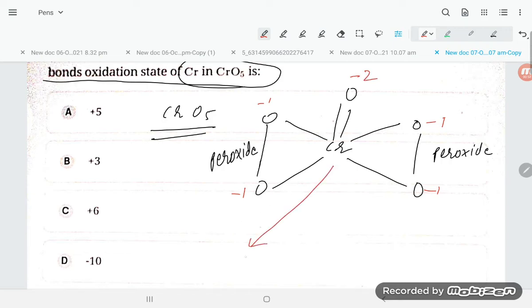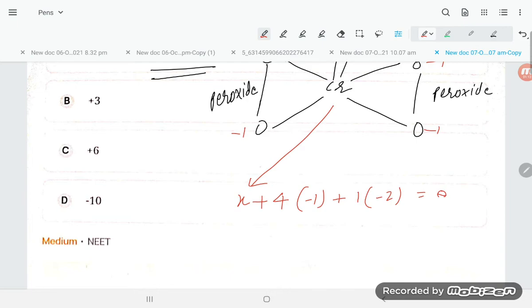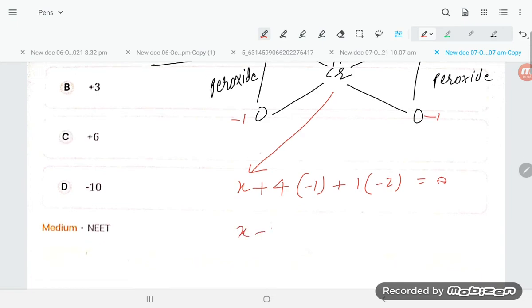We are considering the oxidation state of chromium is x. Then 4 oxygens are there, each oxygen in peroxide minus 1, plus 1 oxygen with oxidation state minus 2 equals 0. So let us solve: x minus 4 minus 2 equals 0.